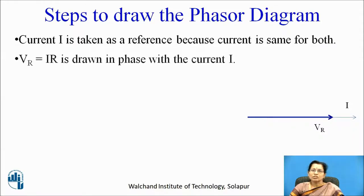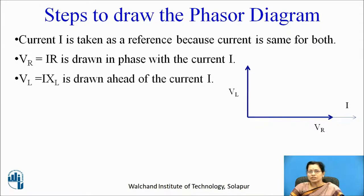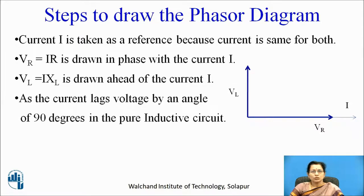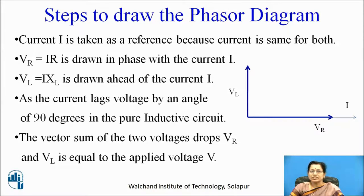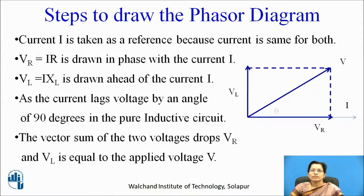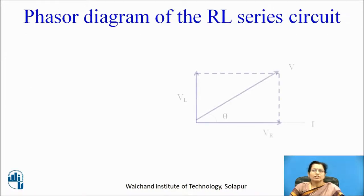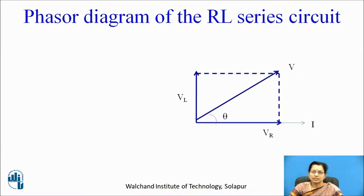Voltage across the resistor is in phase with the current, and for inductive voltage, current is lagging to the voltage. So Vl is drawn as leading the current vector. The vector sum of two voltages, Vr and Vl, is found by drawing the parallelogram of Vl and Vr, and the diagonal gives the total voltage V. The angle theta lies between voltage and current — this is the phasor diagram for the RL series circuit. The current is lagging the voltage by theta degrees.